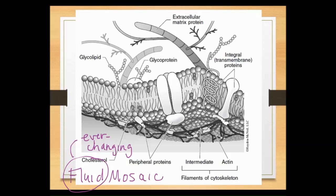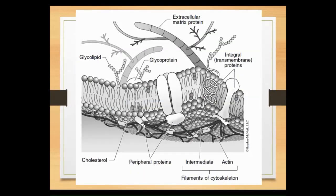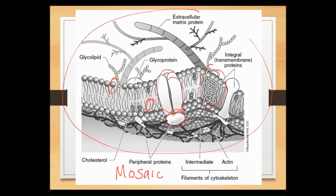Another word we use to describe our cell membrane is 'mosaic.' A mosaic is a piece of artwork made up of a number of small tiles put together to make one big overall picture. This is the same concept with a plasma membrane — we have a number of small pieces that join together to make our big picture. The phrase 'fluid mosaic' is a good one: a number of small pieces that are forever changing, making up our membrane.